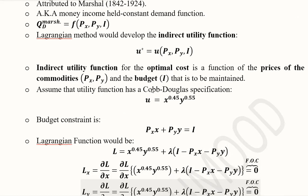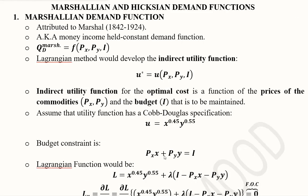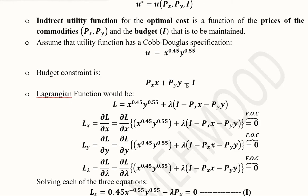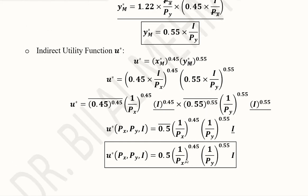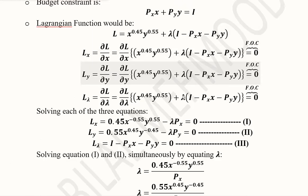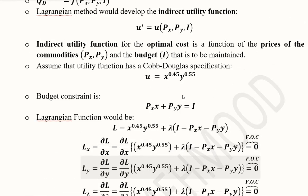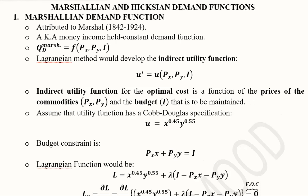We observed that using the Lagrangian multiplier method, the indirect utility function is a function of price PX, income, and the other price PY. Going back to verify, the indirect utility function is indeed a function of PX, PY, and income I. This is how we use Marshallian demand functions to find the maximized utility, known as the indirect utility function. In the next video we will learn about the Hicksian demand function, which is another type of demand function. Thank you.